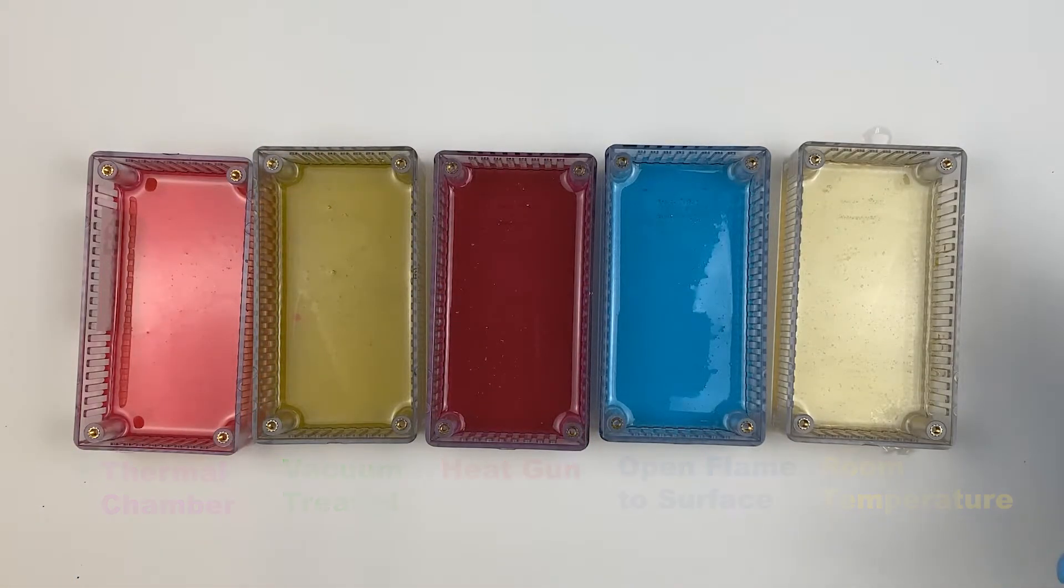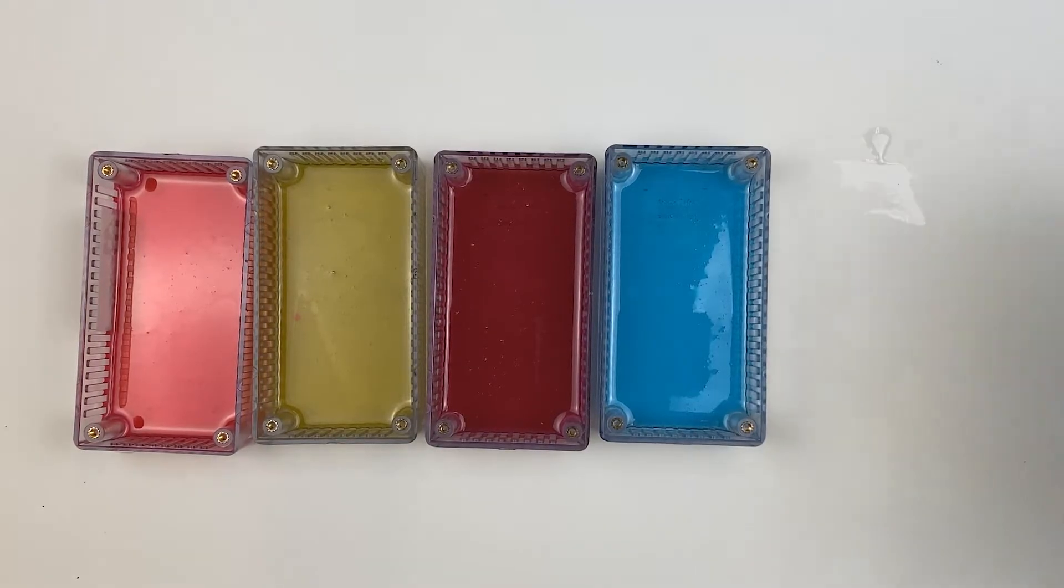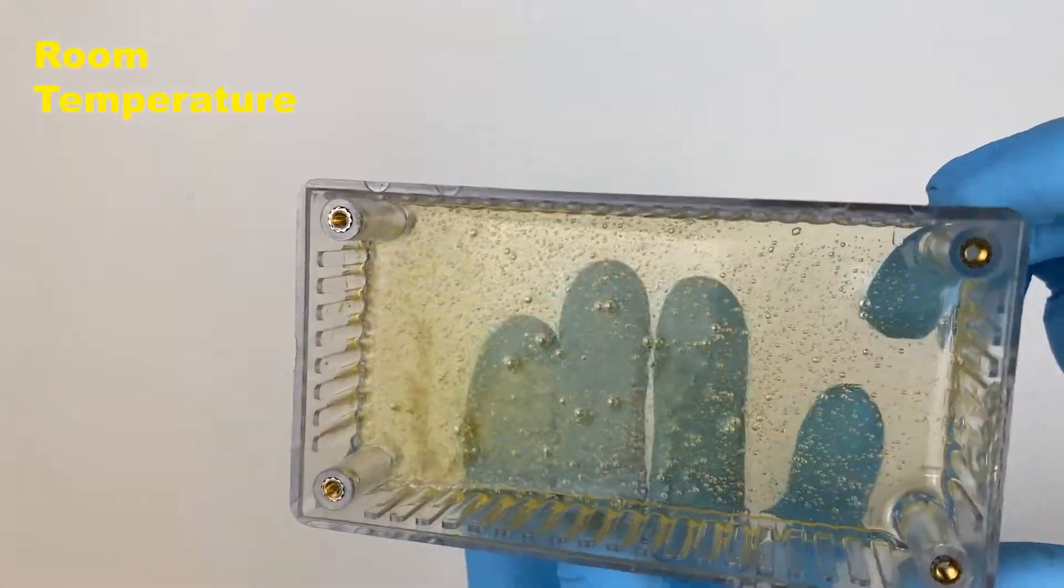The first sample is our control. We're going to set this one aside having done nothing to try and remove the bubbles.